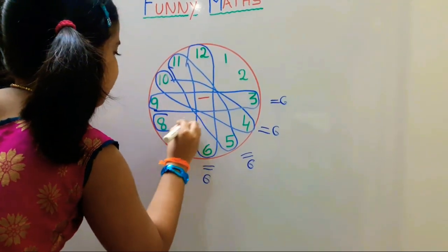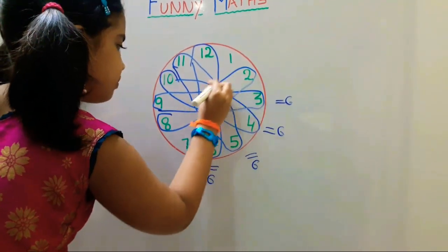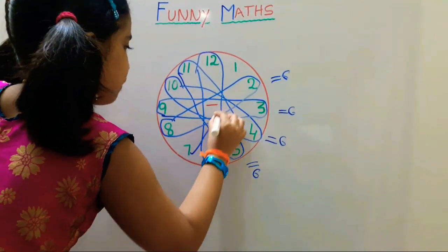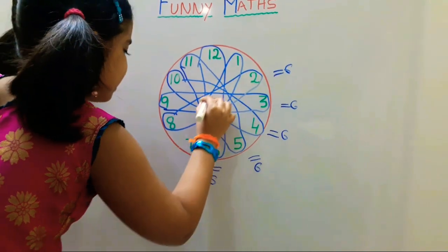8 minus 2 is equal to 6. 7 minus 6 is equal to 6.